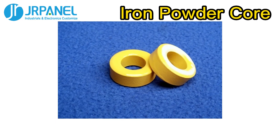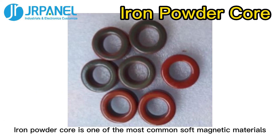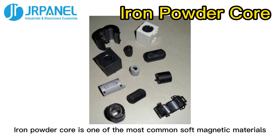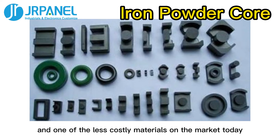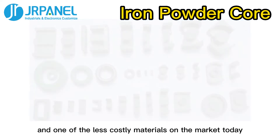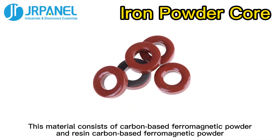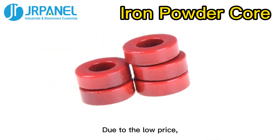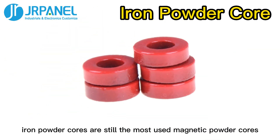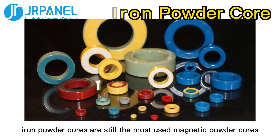Third, iron powder core. Iron powder core is one of the most common soft magnetic materials and one of the less costly materials on the market today. This material consists of carbon-based ferromagnetic powder and resin. Due to the low price, iron powder cores are still the most used magnetic powder cores.